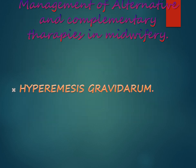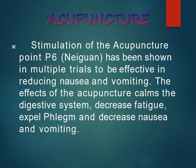Now we will see the management of certain common problems in midwifery using complementary and alternative therapies. The first condition is hyperemesis gravidarum — excessive nausea and vomiting during pregnancy. We can use acupuncture: stimulation of the P6 point has been shown to relieve nausea and vomiting, calm the digestive system, decrease fatigue, and reduce phlegm.